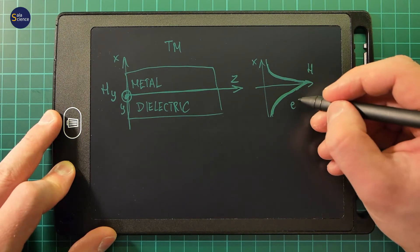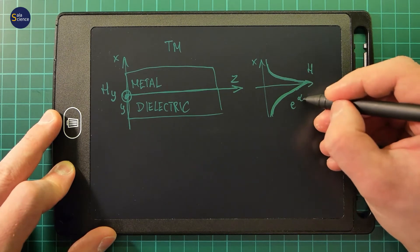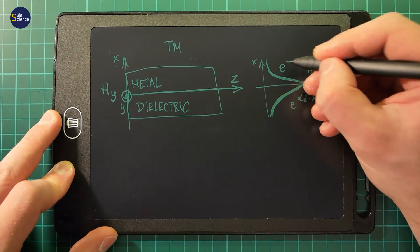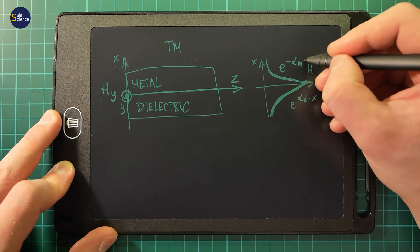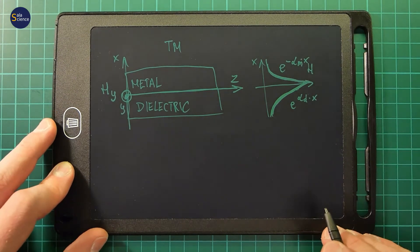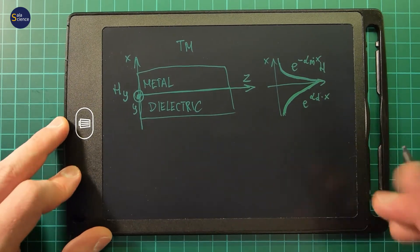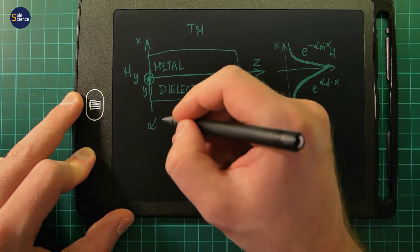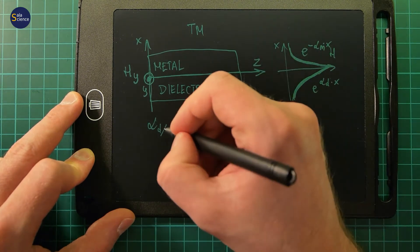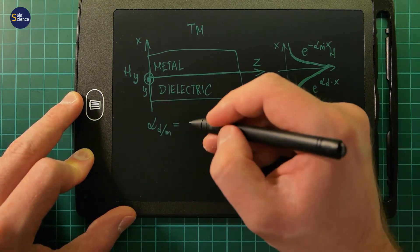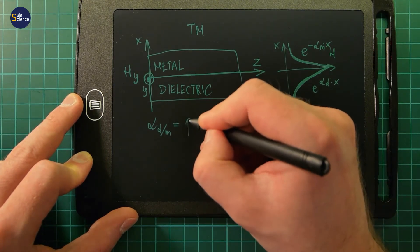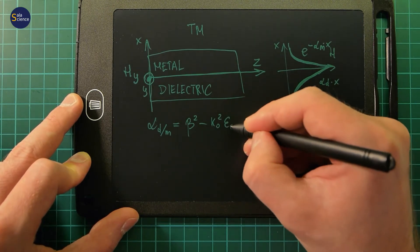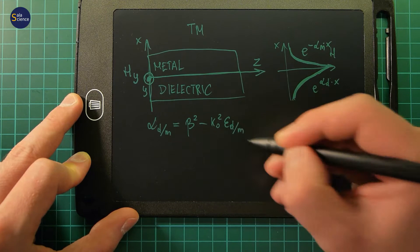So this is e to the power of alpha_d times x in the dielectric, and here is e to the power of minus alpha_m times x in the metal. So it decreases exponentially. This alpha is some complex wave number — a complex variable — which is different in the dielectric and in the metal. It is defined as beta squared minus k-naught squared times epsilon_d in the dielectric, and epsilon_m in the metal.